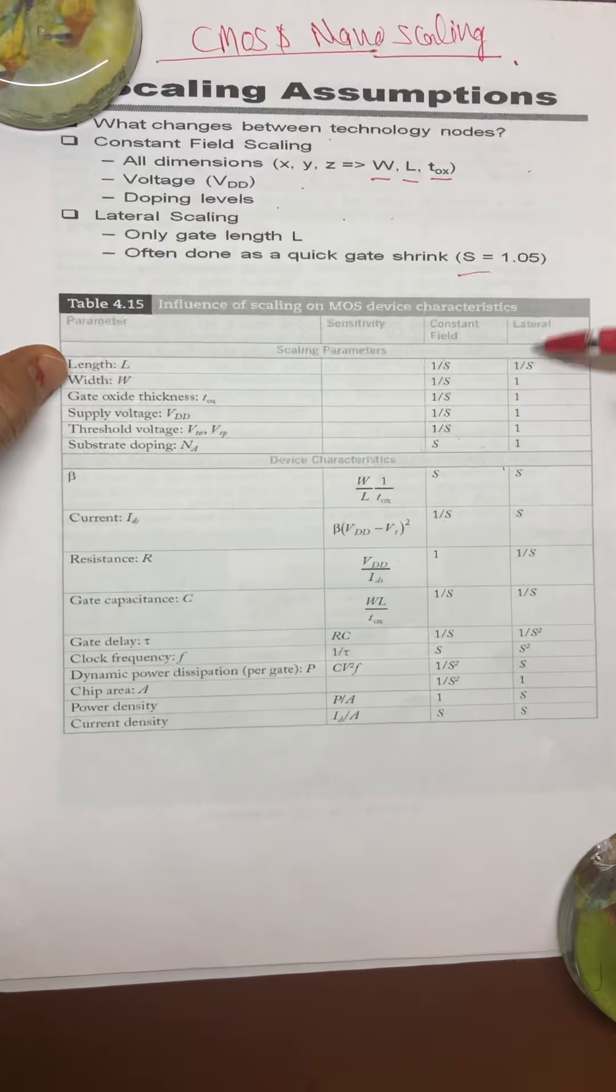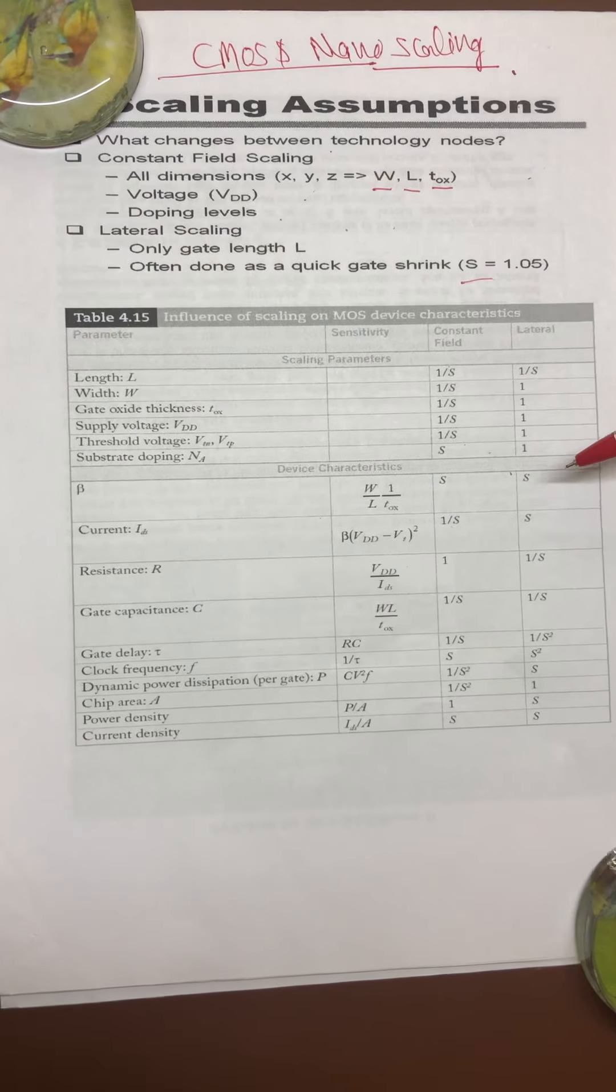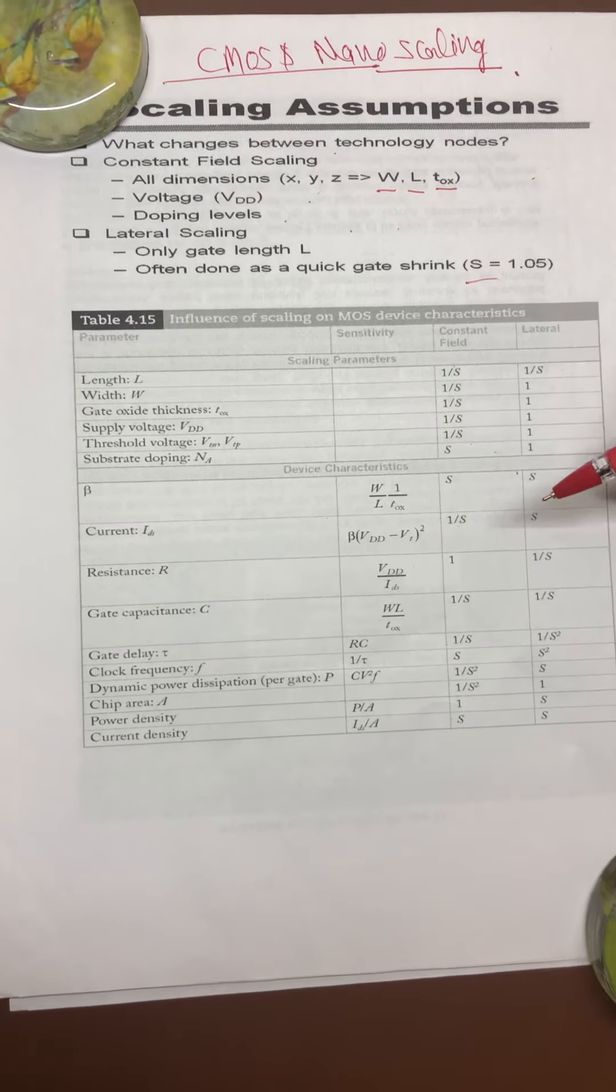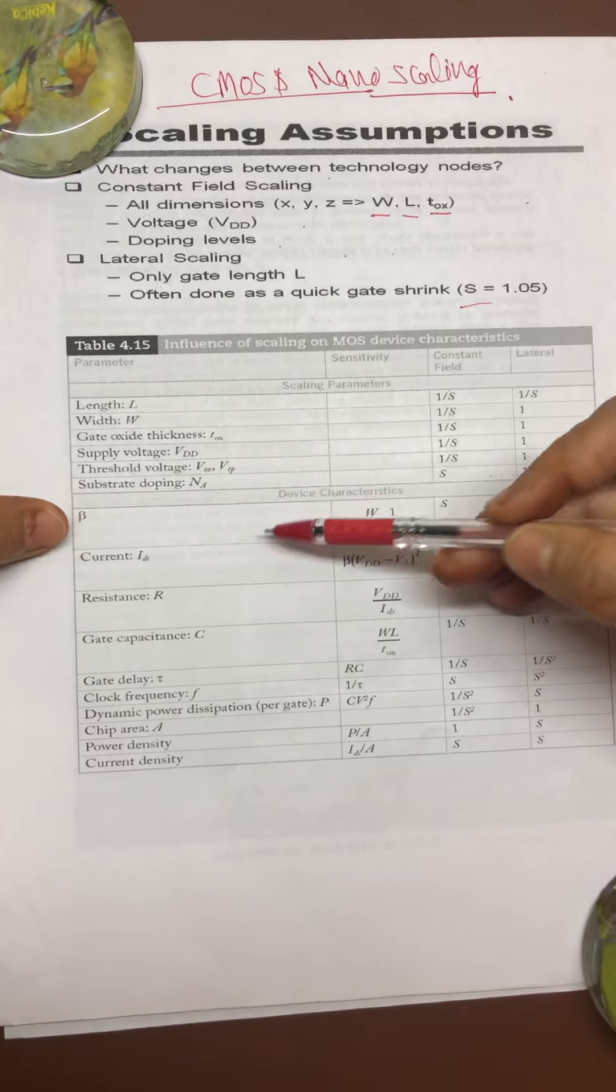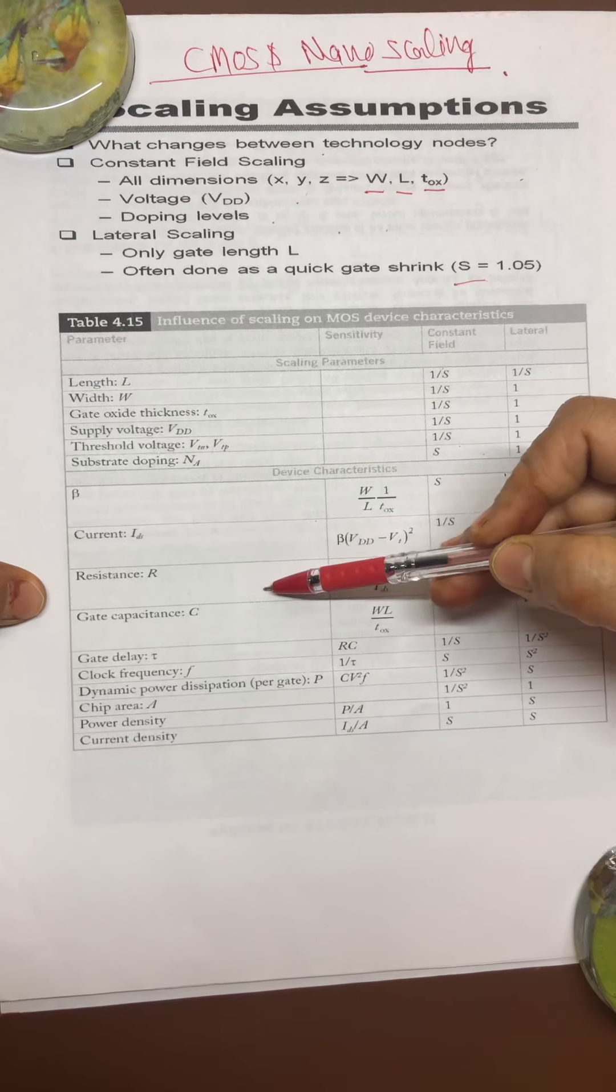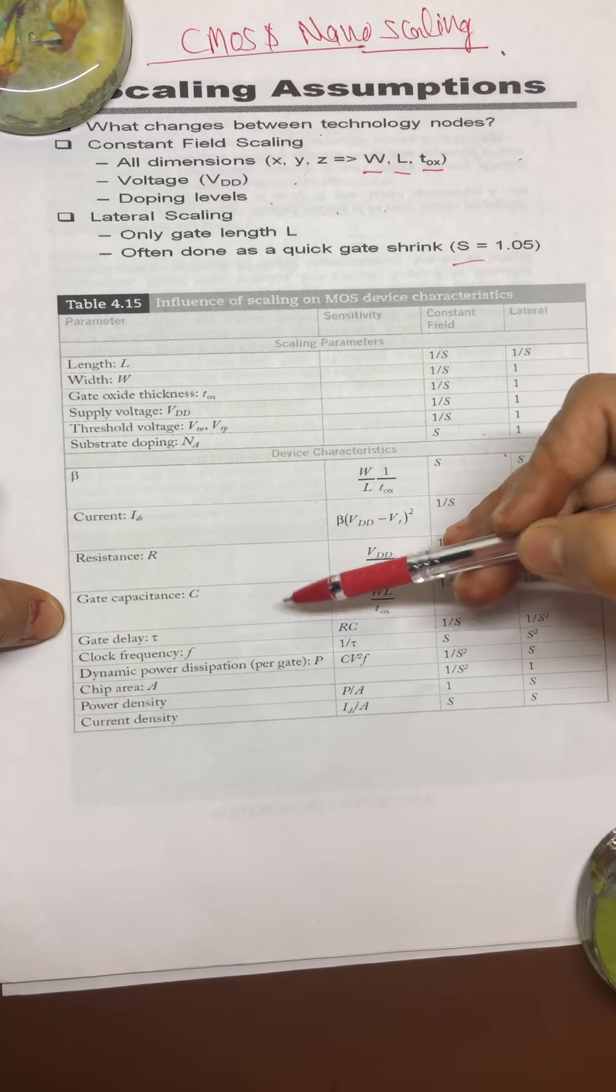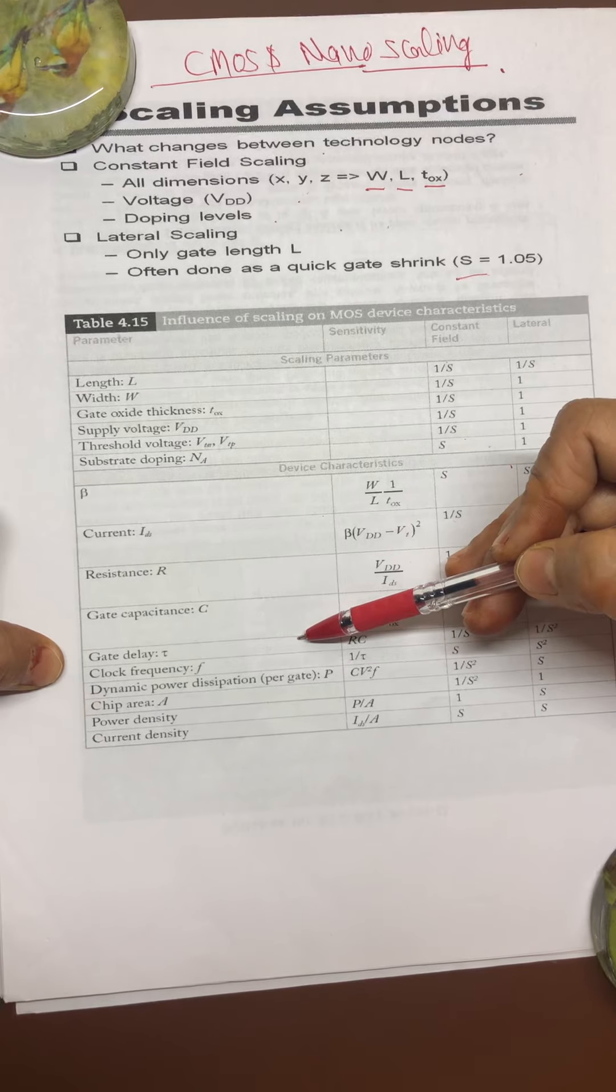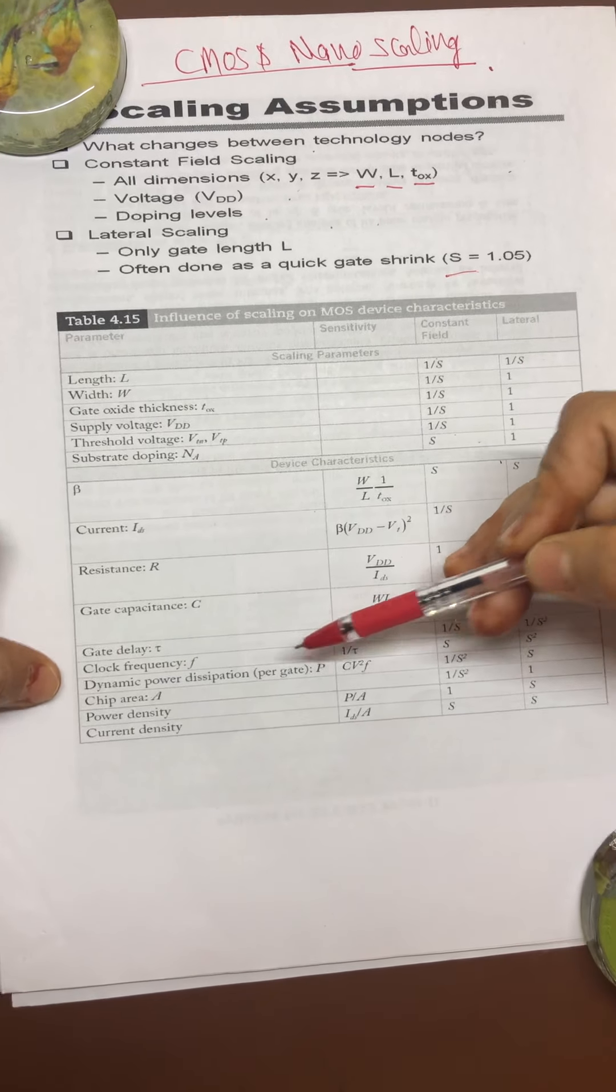As far as device characteristics are concerned, in that category: beta, I_DS that is drain to source current, resistance, gate capacitance, gate delay that is called tau, clock frequency F, dynamic power dissipation P, chip area, power density, and current density.